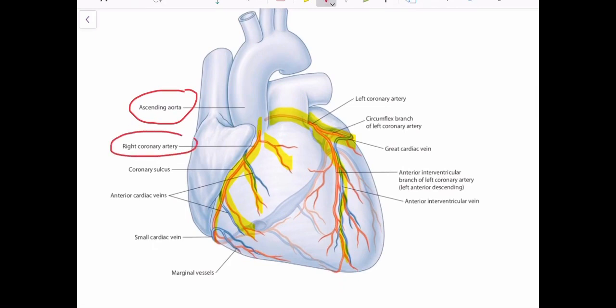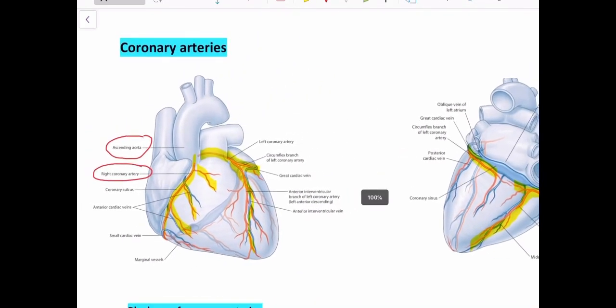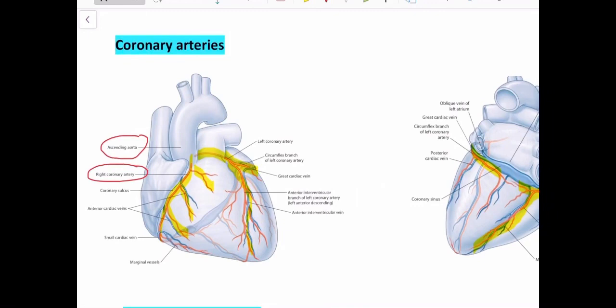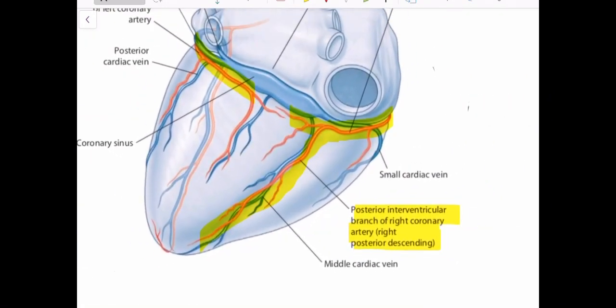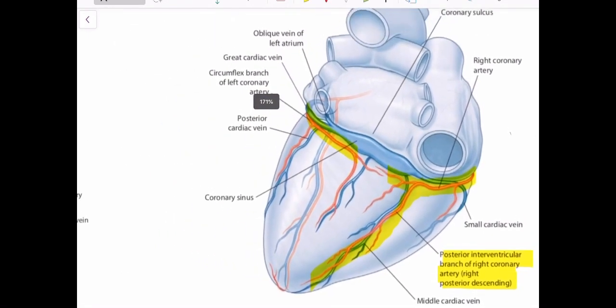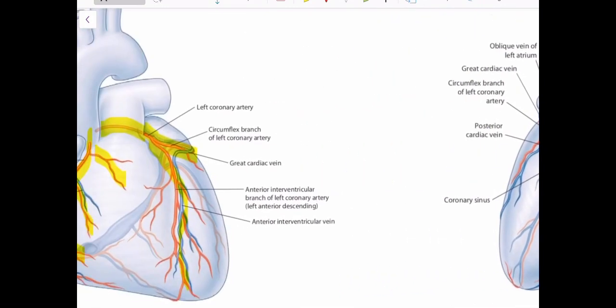One important thing is the right coronary artery supplies your SA node and AV node in the conduction system. If you remember, the SA node is the one that generates your heartbeat and controls the rhythm of the heartbeat. This is how the coronary arteries are in most of the population. We call it right coronary artery dominant system because this posterior interventricular artery is given by the right coronary artery. But in some people, this branch is given by the left coronary artery, and we call them left coronary artery dominant system.